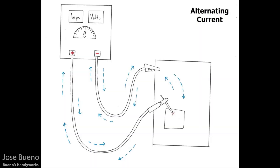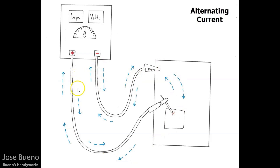Now let's look at a live diagram of alternating current. It uses the same layout as the direct current diagrams: welding machine, work table, workpiece, ground clamp, electrode cable, and positive and negative terminals. The arrows point in two different directions — outside the circuit traveling from negative to positive, and inside traveling from positive to negative.